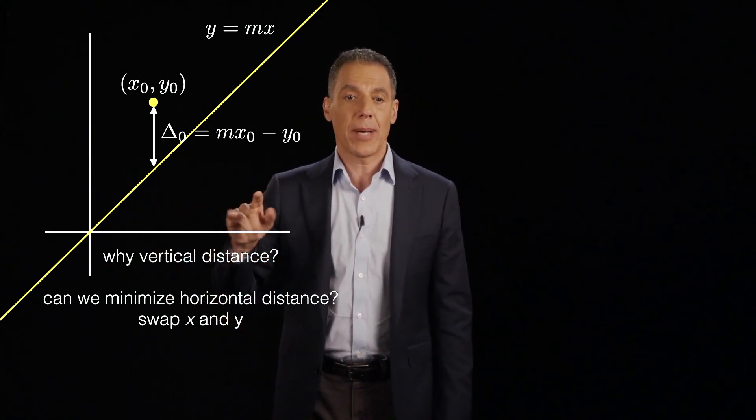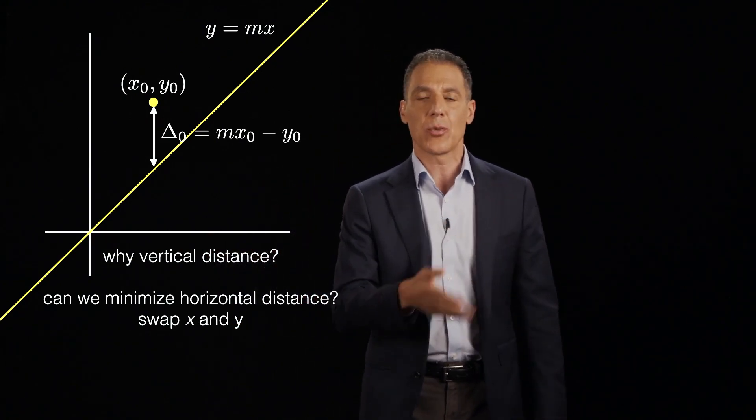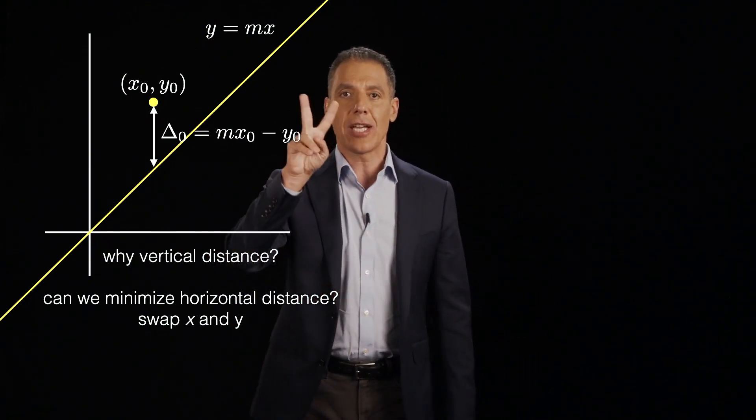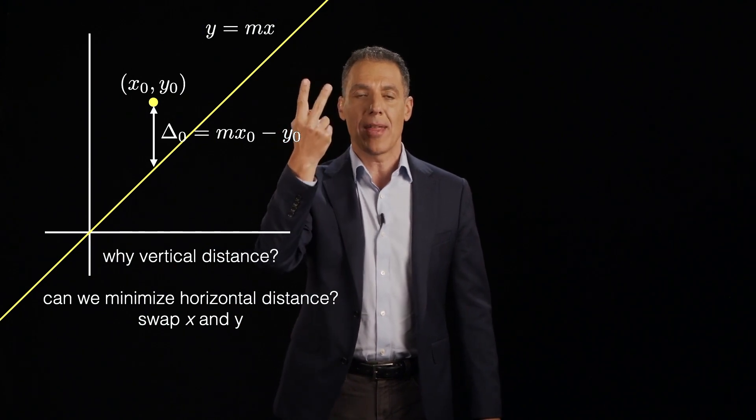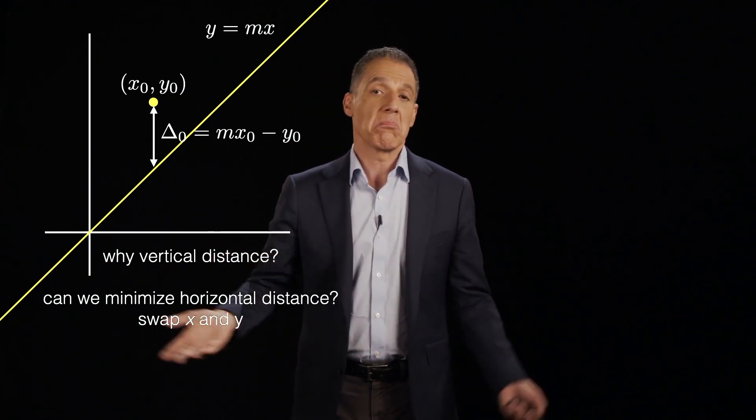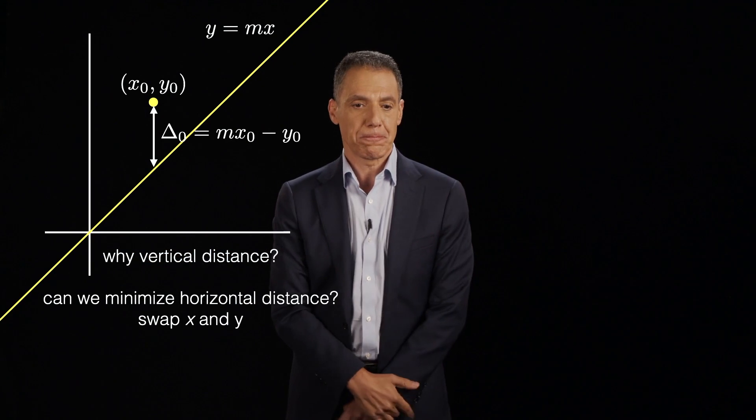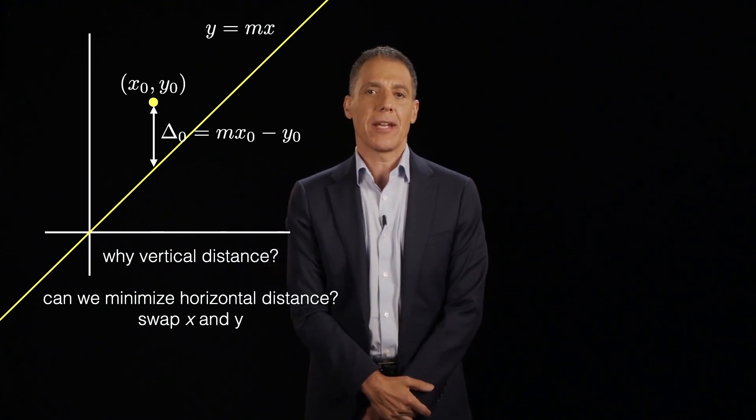And we could have done it by just swapping the x, y coordinates and then running least squares or weighted least squares. So, if we just take the x's and the y's and swap them, you're still fitting a line. Everything works equally well. That would have been perfectly fine. Nothing wrong with that.